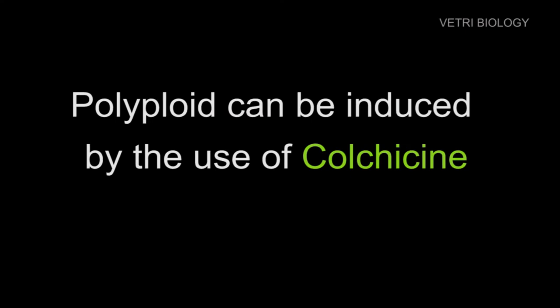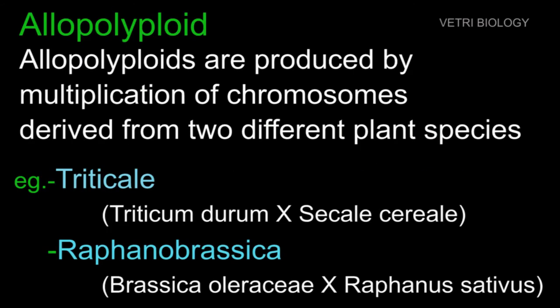Colchicine is used to produce the polyploid condition. In allo-polyploid, the polyploid condition is produced by the multiplication of chromosomes derived from 2 different plant species. Examples include triticale and Raphanobrassica. Triticale is a combination of Triticum durum and Secale cereale. Raphanobrassica is a combination of Brassica oleracea and Raphanus sativus, and it is an intergeneric hybrid variety.